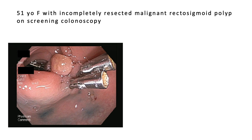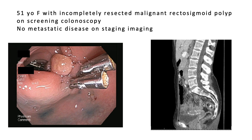The patient is a 51-year-old woman who had an incompletely resected polyp on screening colonoscopy, which was found to have invasive adenocarcinoma. She had standard staging workup and no additional lesions were found. On this sagittal view, you can appreciate the clips at approximately the rectosigmoid junction.